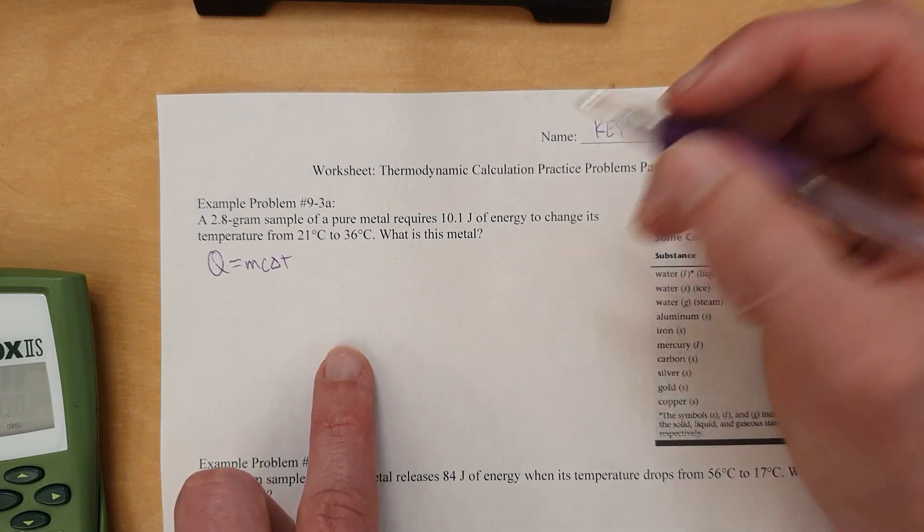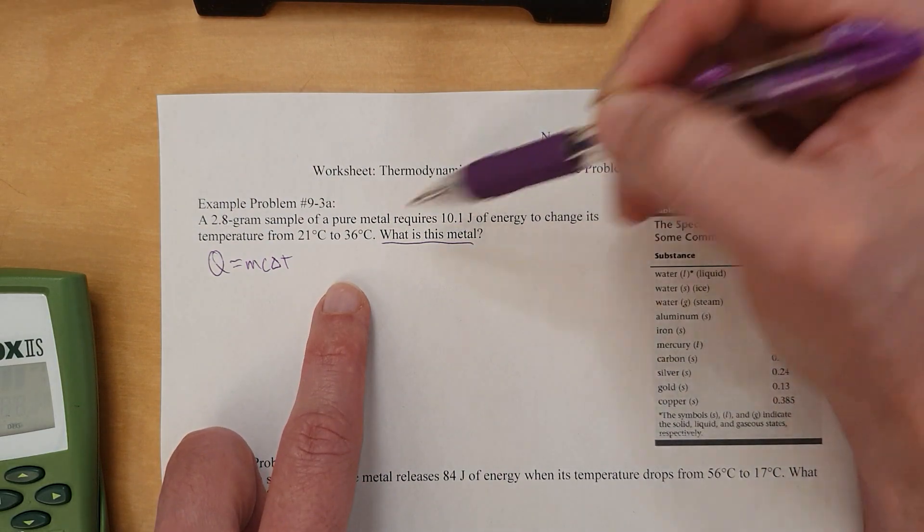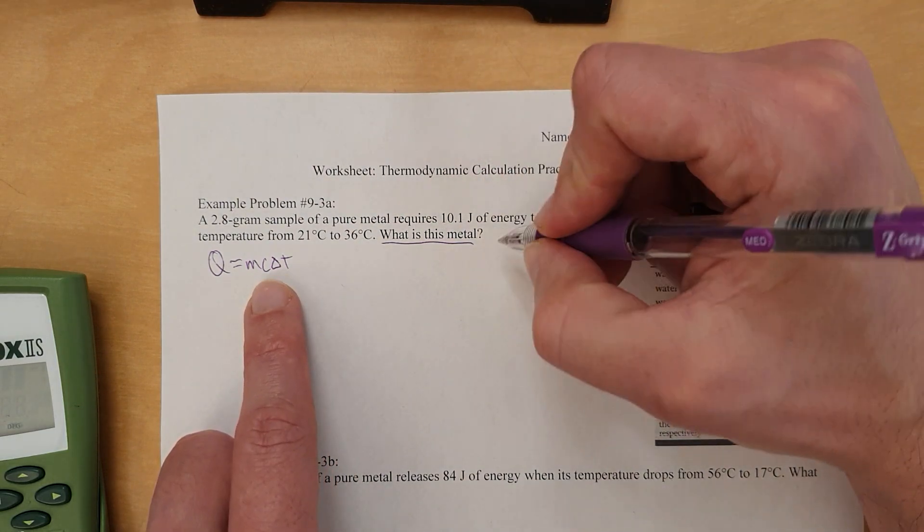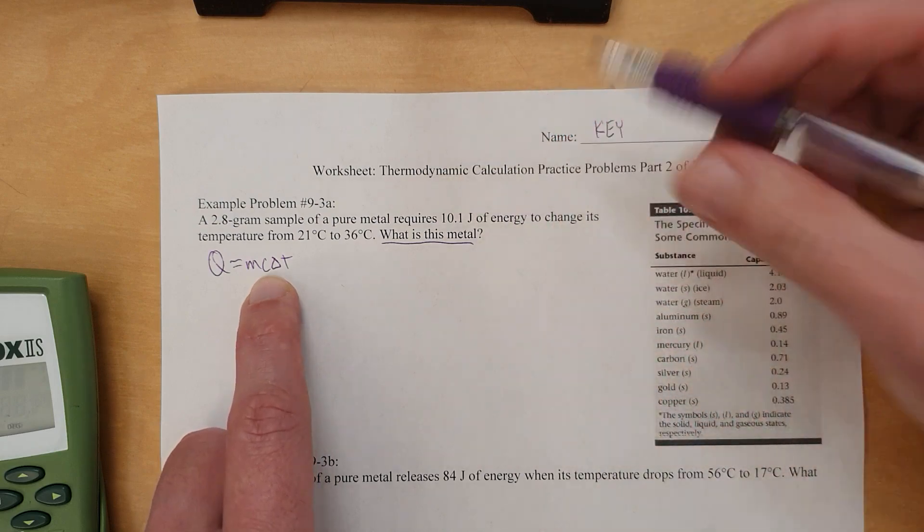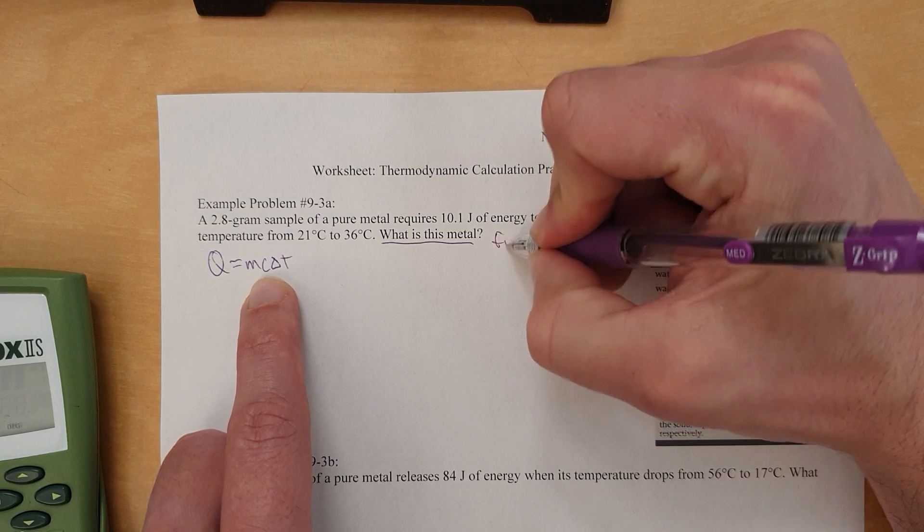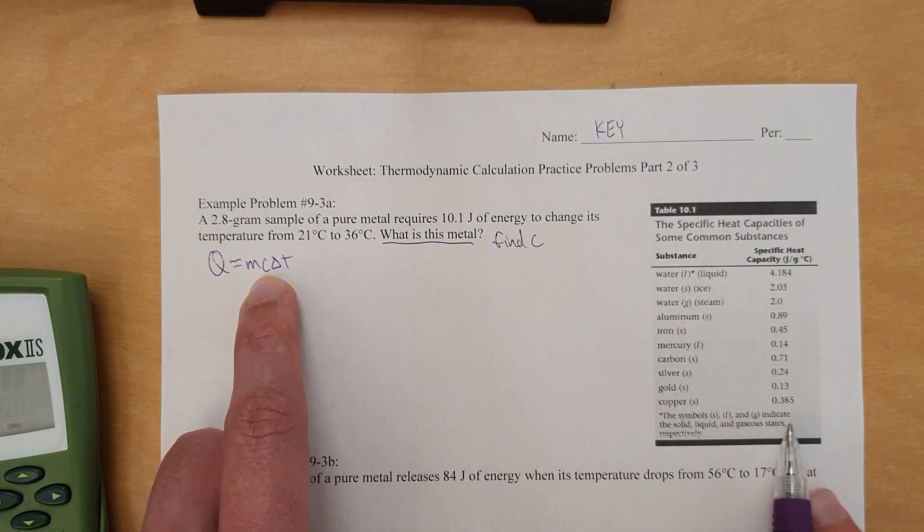Now, how do I know you're going to need C? It's because it asks, what is the metal? It gives you mass, energy, and temperature. It asks what's the metal? The idea here is that C, the specific heat capacity, is different for each metal, so if you figure out what C is, yes, find C, you can then match C to this list and figure out which metal it is.